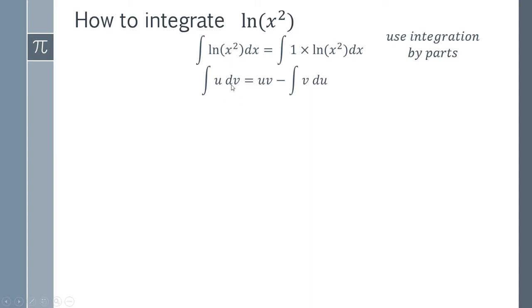to decide what u is going to be and what dv is going to be. We could pick either of these functions to be either of these, and I would suggest that the best way to do it is to take u to be the ln(x²) and to take dv to be 1, and that's what we're going to do here.